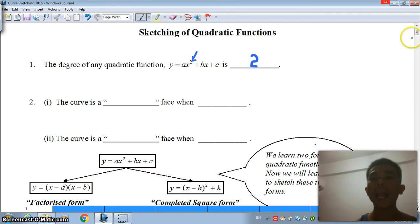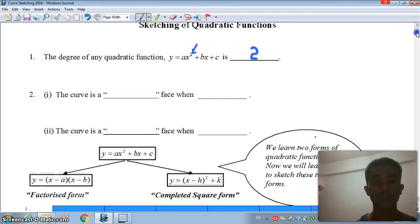Next, in any quadratic function, the shape of the curve is either a u-shape or an n-shape, otherwise known as a smiley face or a frowning face.